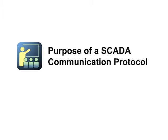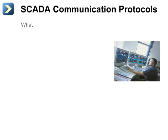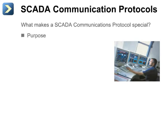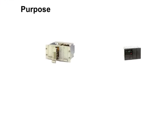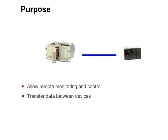Let's begin by looking at the purpose of a SCADA communication protocol. We'll look at the purpose and objectives and provide a few examples. The primary purpose of a SCADA communication protocol is to allow remote monitoring and control. To do this, the protocol must support the transfer of data between devices. One step of this process is to replicate the database from one device to another.